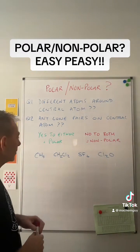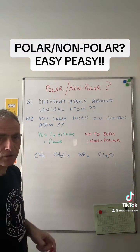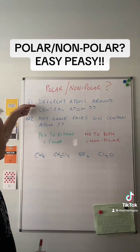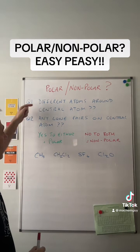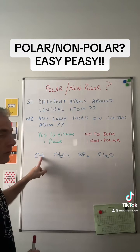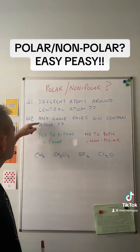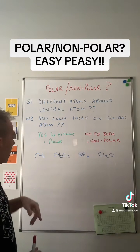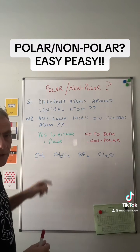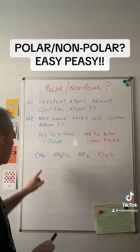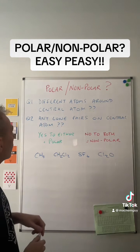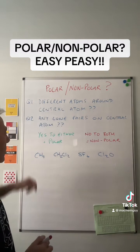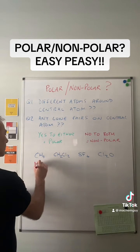So we'll put that into practice with these four simple covalent molecules. Starting with CH4. Question one: have we got different atoms around the central atom? No, they're all hydrogen. Question two: are there any lone pairs on that central carbon atom? No again, because carbon's in group four — it's got four outer electrons and it's made four covalent bonds. So the answer is no to both, meaning this one is non-polar.